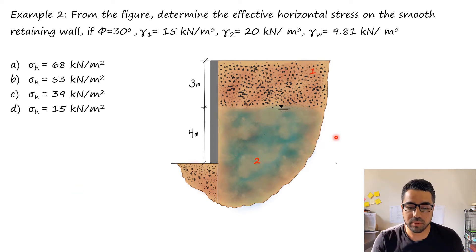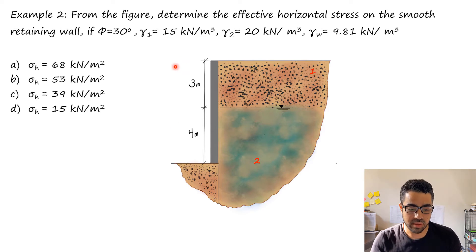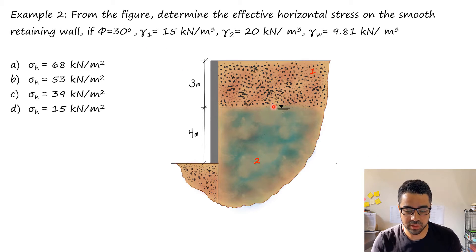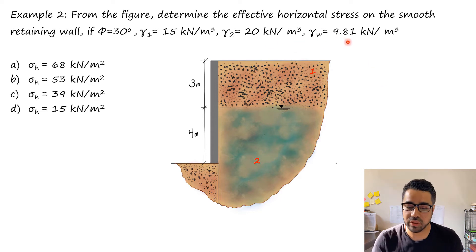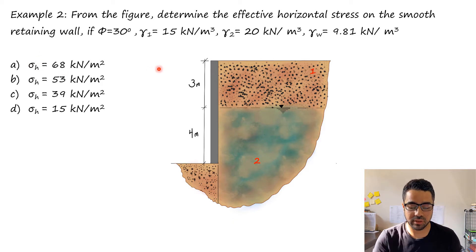This is Example 2 — we will solve Example 2 and Example 3. Last time we solved Example 1. In this example, we are looking to find the horizontal stresses applied on this wall. The total height is seven meters. We have two layers: the first is dry, γ1 is given; the second layer has groundwater, γ2 = 20 kN/m³, γ_water is given. φ, the angle of internal friction, is also given.